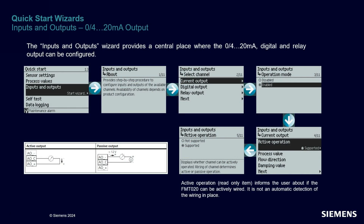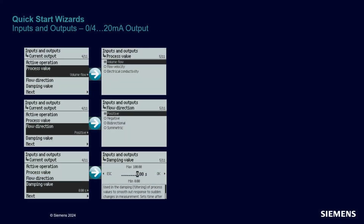For the classic current loop output, you start by choosing whether active operation mode is supported — this depends on your wiring. Then you select the process value of interest amongst three possibilities: volume flow, flow velocity, and the new electrical conductivity.